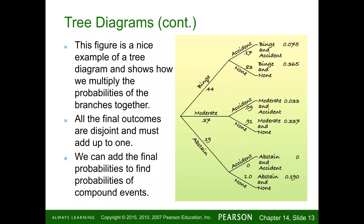In this example there are three choices — you can binge, do something moderately, or abstain — and then a conditional part: whether the outcome is an accident or none. So there are three choices in the first scenario and two in the second. Three times two gives six total outcomes, and the final probabilities all add up to one.